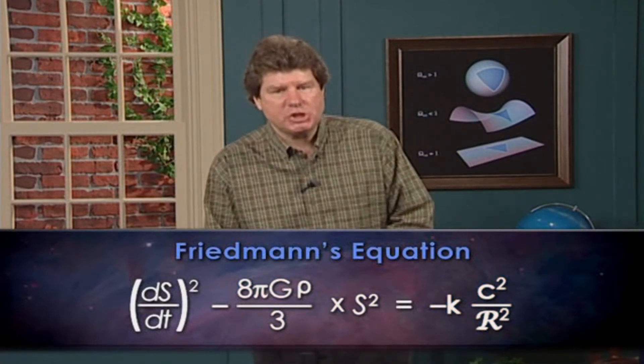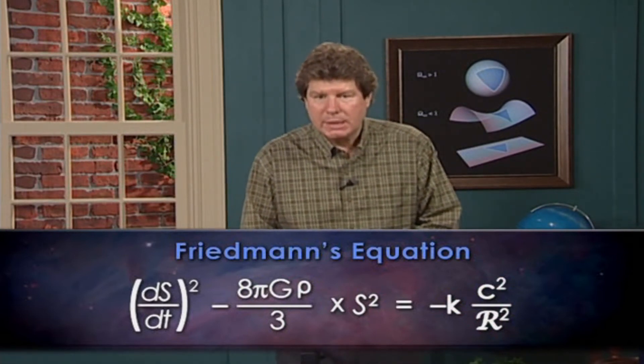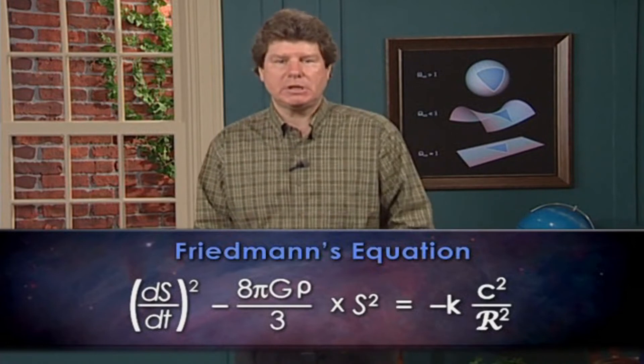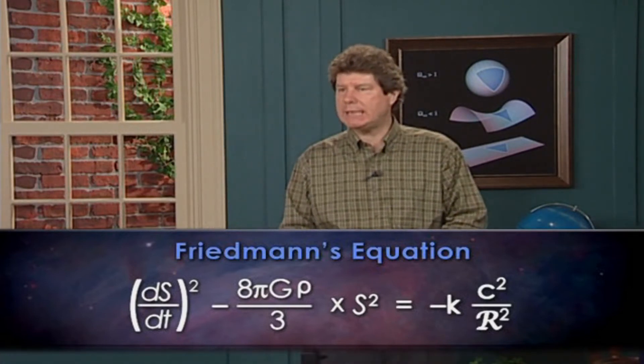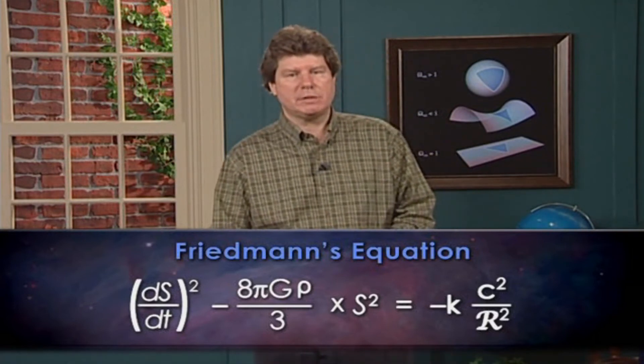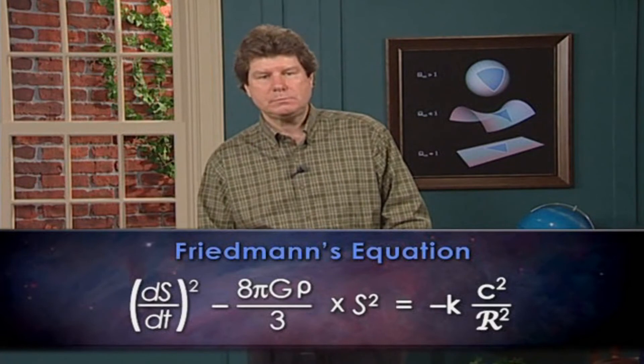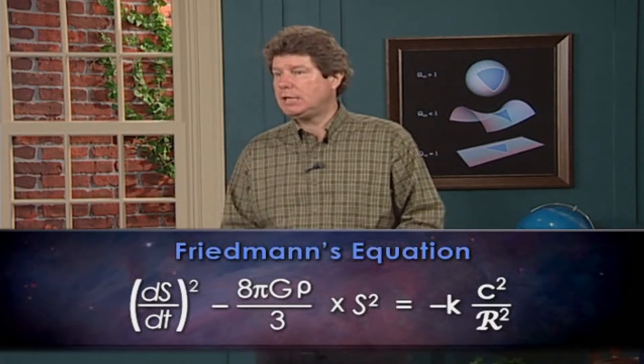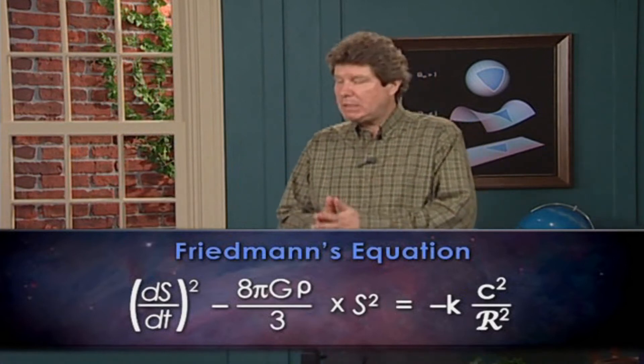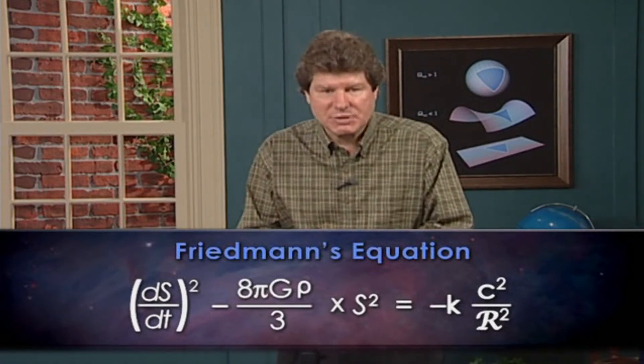It's the right-hand term that looks new. It describes the geometry of the space. Curly R is the space's radius of curvature, while k keeps track of whether the curvature is negative, zero, or positive, by being minus one, zero, or plus one. So, what was our total energy in the Newtonian treatment becomes a geometry term in our Einsteinian treatment.